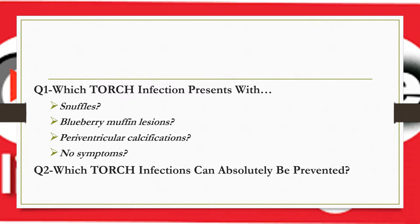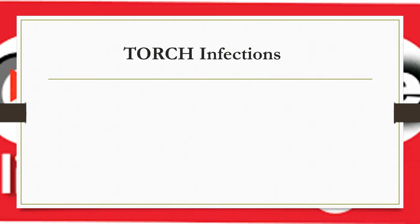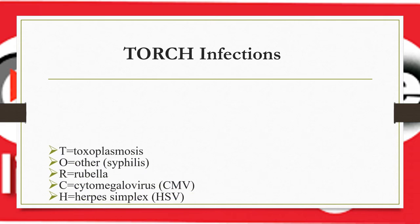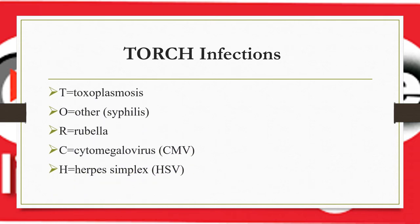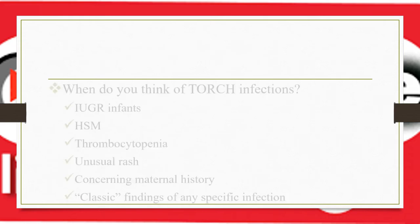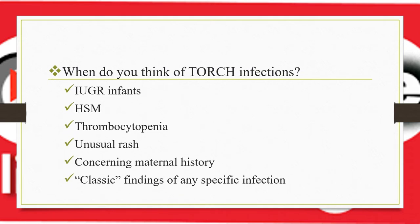The second question is: which TORCH infection can absolutely be prevented? We'll answer those questions after discussing each TORCH infection. TORCH is an acronym for a group of congenitally acquired infections that may cause significant morbidity and mortality in neonates. It stands for: T - Toxoplasmosis, O - Others (mainly Syphilis), R - Rubella, C - Cytomegalovirus, H - Herpes Simplex.